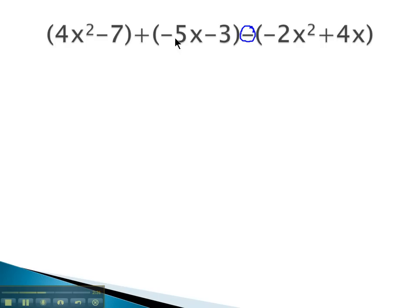The plus in front of a polynomial won't change anything, so we'll copy everything up to that subtraction sign, that opposite sign the same way. We have 4x squared minus 7 plus negative 5x, negative 3. And then, distributing the negative through, the opposite of negative 2x squared is positive 2x squared, and the opposite of 4x is minus 4x.